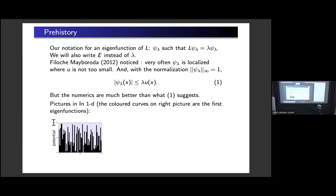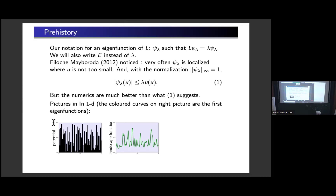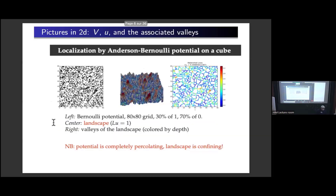Here is an example of the sort of potentials I'm interested in — a one-dimensional potential. In this case, it's a uniform random potential chosen on the grid, which gives you this. Then you can compute U, which gives you something that follows the potential in a vague way, a little bit smoother. Here are the first eigenfunctions for this potential, which tend to be in places where the function U itself is large. For those random potentials, they are often localized in places you can guess by looking at the landscape function.